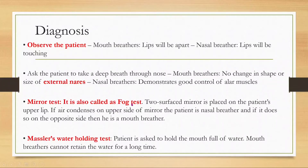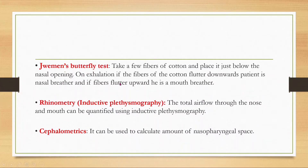The water holding test asks the patient to hold a mouthful of water — mouth breathers cannot retain it for long as their breathing is interrupted. In the butterfly test, a few fibers of cotton are placed just below the nasal opening. On exhalation, if the fibers flutter downward, the patient is a nasal breather; if they flutter upward, the patient is a mouth breather.